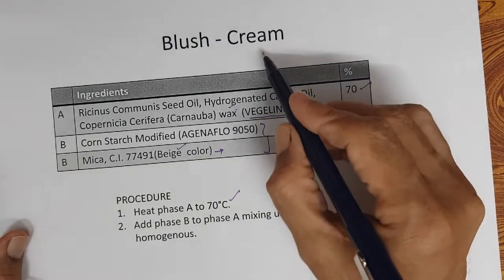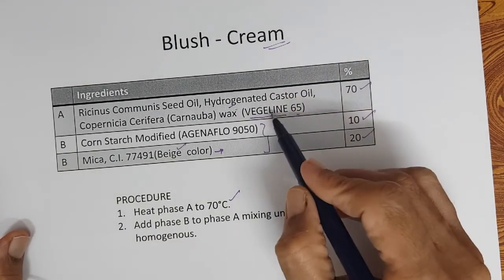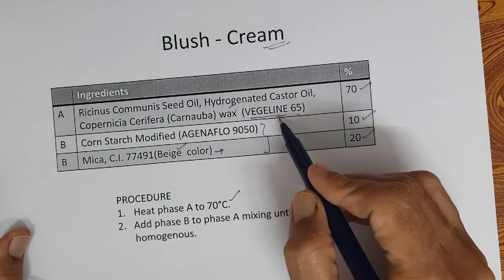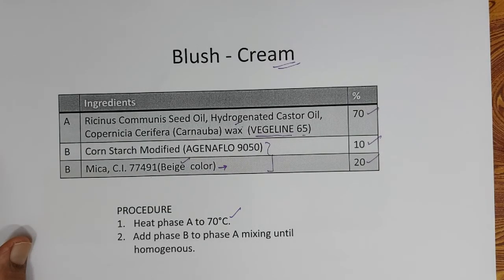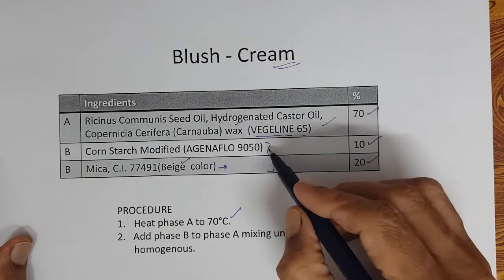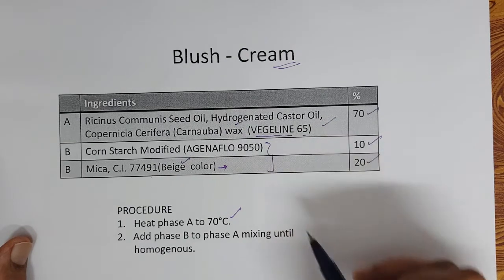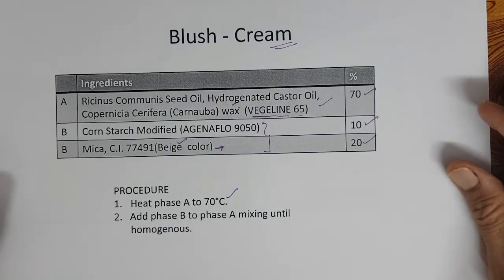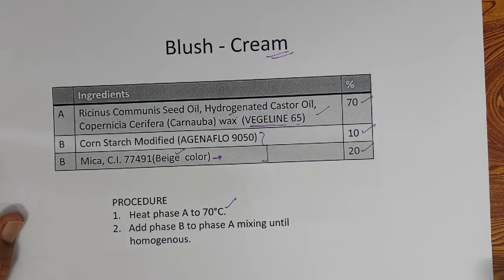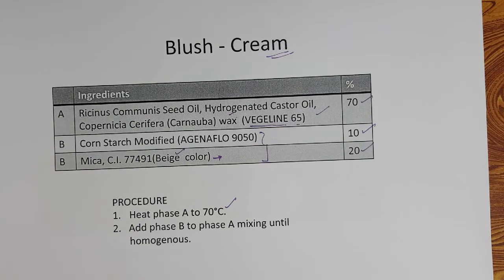Basically it is called a cream; however it is not an emulsion. This is an anhydrous preparation — meaning no water. Basically the oil phase where modified starch and the color are dispersed. Now we will see a photograph of the compressed powder blush and a sample of a blush cream.